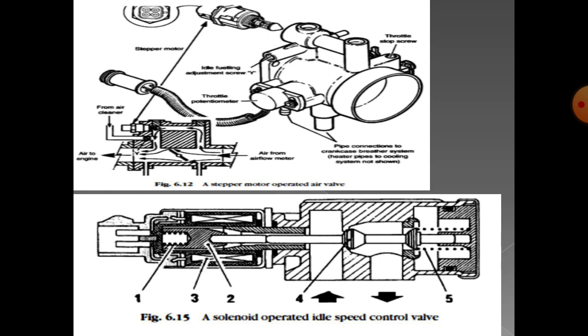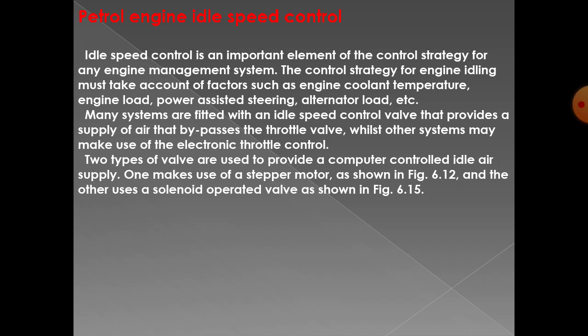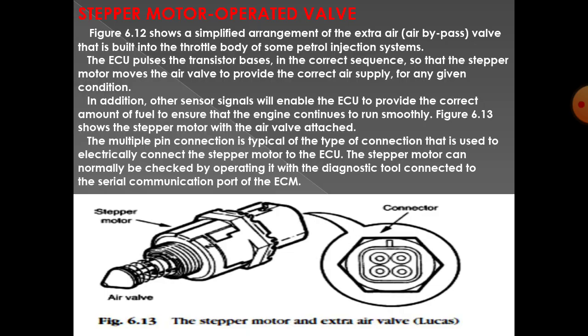The next diagram shows the solenoid operated idle speed control valve, with a number of valves operating. This shows the simplified arrangement of the extra air valve that is built into the throttle body of some petrol injection systems. The ECU pulses the transistor base in the correct sequence so that the stepper motor moves the air valve to provide the correct air supply for any given condition.